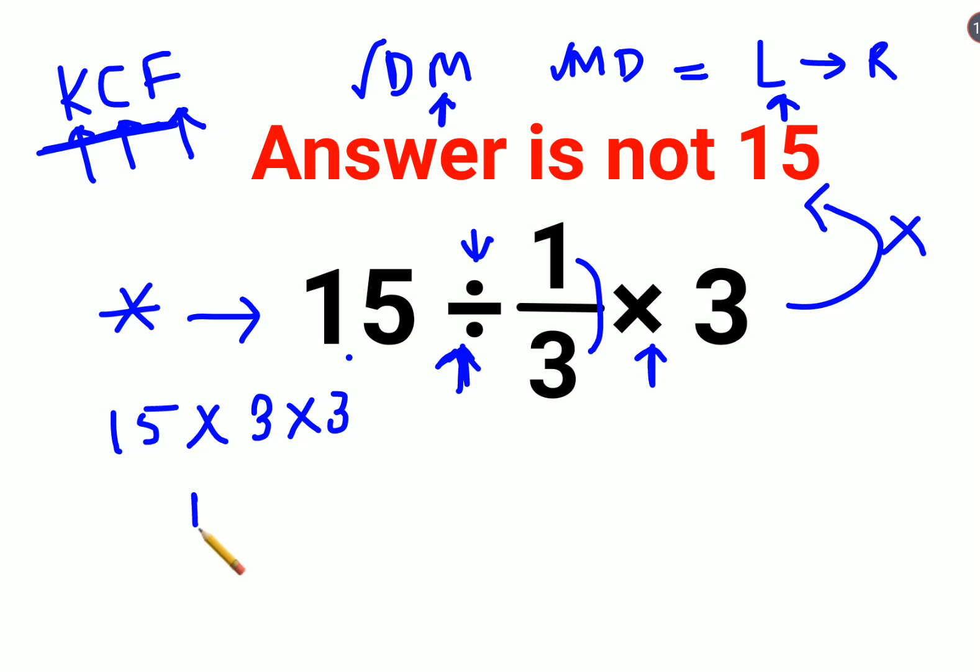So now what we have over here is 15 times 3 times 3. Now please understand, when you just have multiplication, you can do any which way.